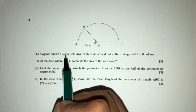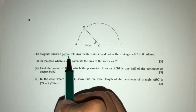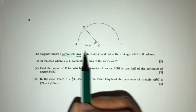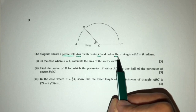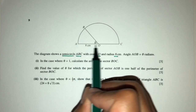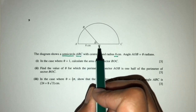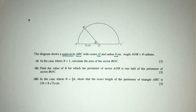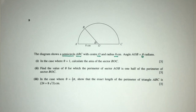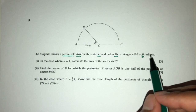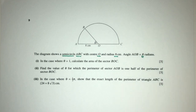The diagram shows a semicircle ABC with center O and radius 8. This is the radius 8 and the center is O right here. The angle AOB is theta radians. That's the given information that we have.